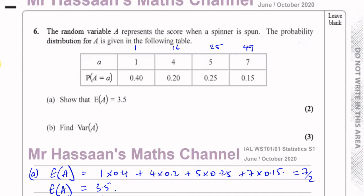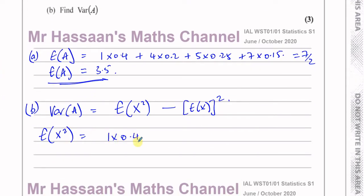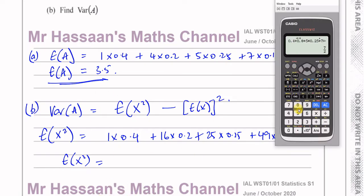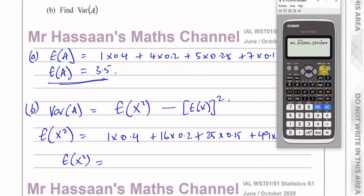You multiply these squared values by their probabilities: 1 times 0.4, plus 16 times 0.2, plus 25 times 0.25, plus 49 times 0.15. That gives you E(A²) = 86 over 5, which is 17.2.